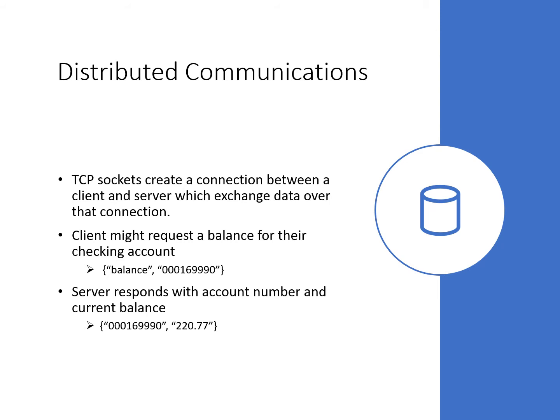Once the socket is created, the client sends data to the server as a message over a stream. In our bank example, the client might request a balance for their checking account. Ignoring all language-specific issues and security, the client might send a message payload as shown on the slide here with 'balance' and the account number. In the server we need to know that the first string in this message is the operation identifier, i.e. get the bank balance, and based on this being 'balance', the second is the bank account number that we want to retrieve the balance for.